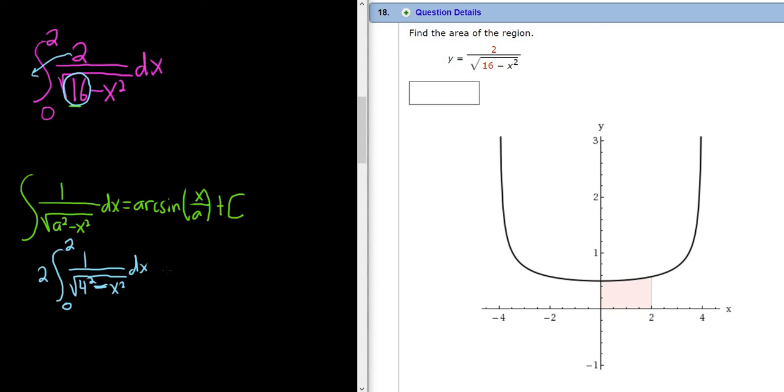All right, let's apply the formula. So this will be 2 arc sine of x over a, so x over 4. And we don't need the C because it's a definite integral. So you can use a line, you can use a bracket, or you can go all out and use a double bracket. Let's take that approach. And so we're going from 0 to 2.